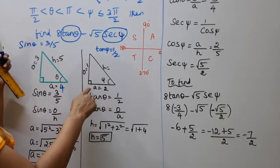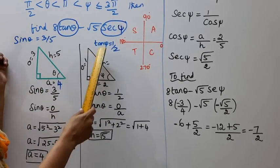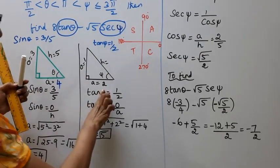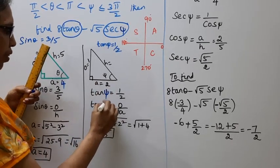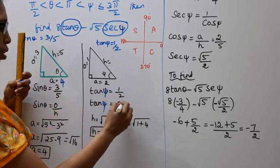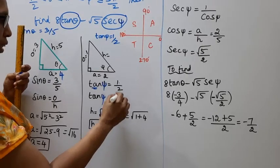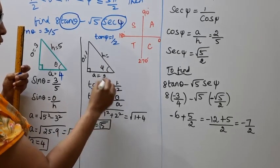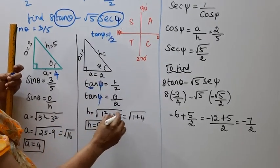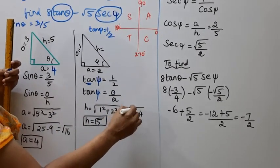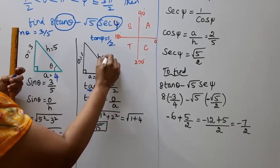For angle φ, draw another right angle triangle. tan φ = 1/2, and tan equals opposite by adjacent, so opposite = 1 and adjacent = 2. The hypotenuse is square root of 1² plus 2², that is square root of 1 plus 4, so hypotenuse equals root 5.